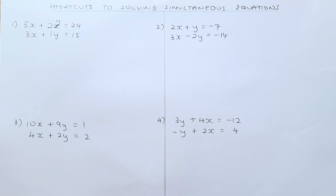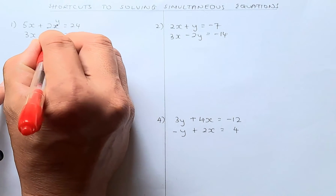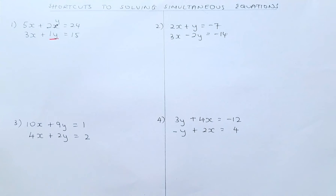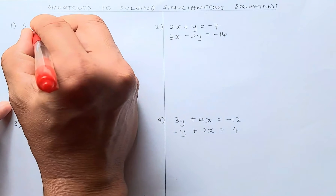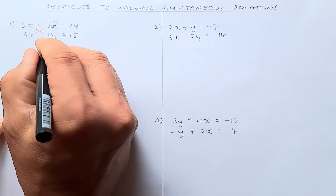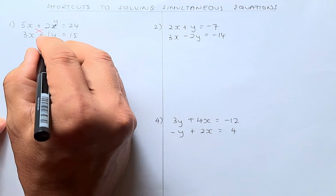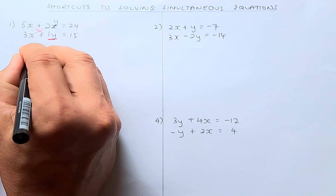I'm going to go very slowly for the first two and then we're going to do very fast on the next two. So the pivot is the middle number here, 1y. So what you do, you're going to do a cross multiply — you're going to multiply them across. So the number is going to be 1; just take the number, don't worry about the y and the x.